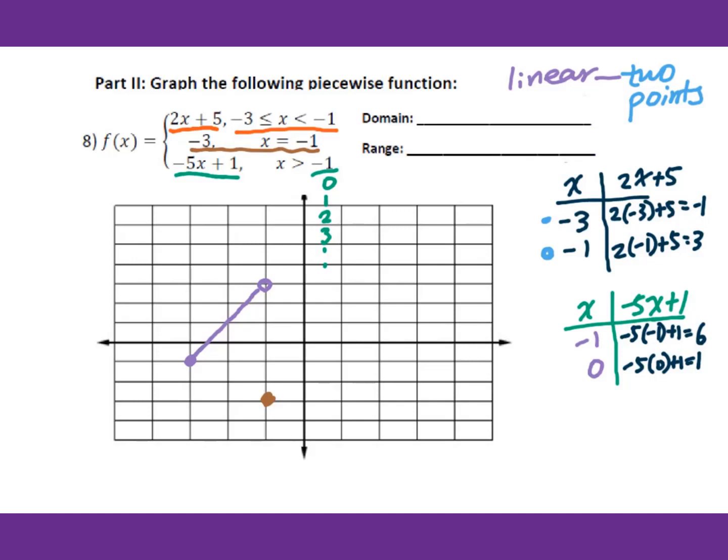Check the boundary at negative 1 — no equal sign, so this is an open circle. Plot (negative 1, 6) as an open circle, then find (0, 1). The line continues with an arrow since there's no right endpoint.